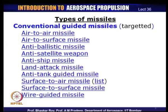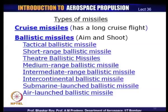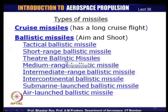Cruise missiles have a long cruise flight, much like an aircraft — they fly at a constant altitude for a large part of the flight. Most missiles have a parabolic or curved trajectory, but cruise missiles cruise for hundreds of kilometers at constant altitude and then land at a predetermined target. Ballistic missiles are the aim-and-shoot kind used for various military purposes — their purpose is built into their name.